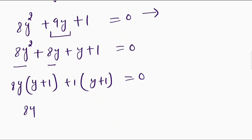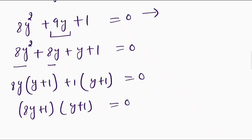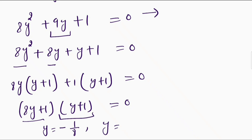So this will become (8y plus 1)(y plus 1) is equals to 0. From here I will get y is equal to negative 1 by 8, and from here I will get y is equal to negative 1.